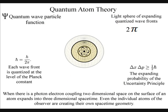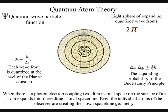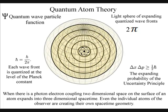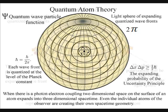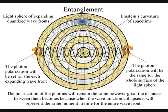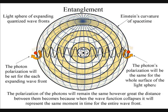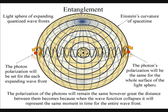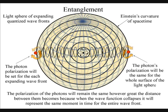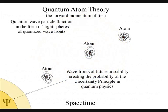Light will always take the simplest and most efficient path, expanding out in all directions, forming light spheres of electromagnetic radiation. The polarization of the light will be the same for the entire surface of the light sphere, creating quantum entanglement and the symmetry and geometry of space-time.